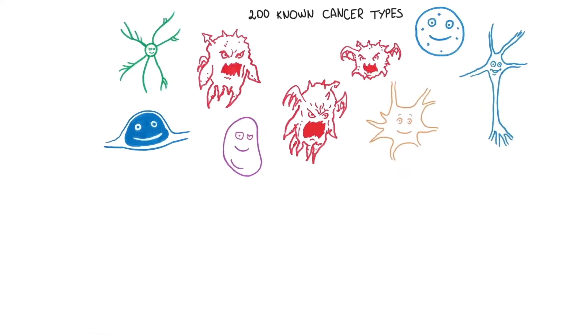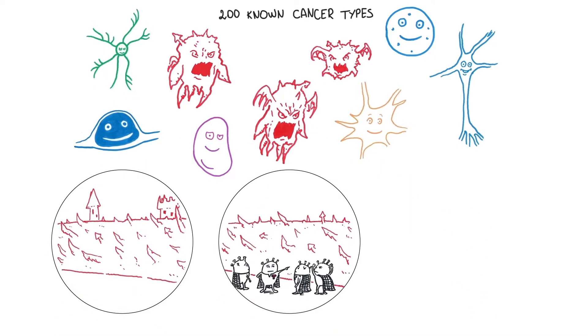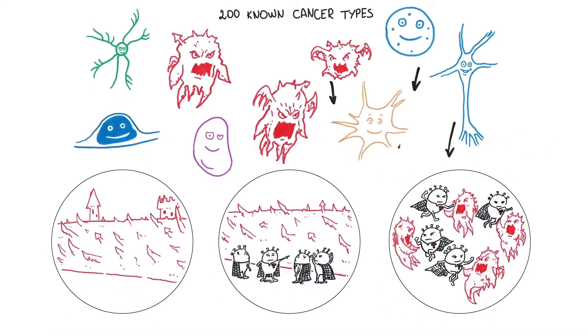One of these exciting approaches is the ability to understand how best to separate out all of human cancer, of which there are over 200 known types, into just three primary immune profiles.